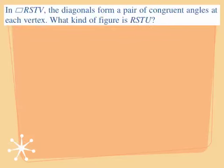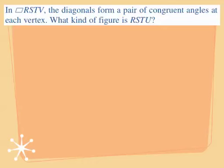In parallelogram RSTV, the diagonals form a pair of congruent angles at each vertex. What kind of figure is RSTV? If the diagonals form congruent angles at each vertex, the diagonal is bisecting two sets of angles. This tells us the shape is a rhombus — because a parallelogram is a rhombus if and only if each diagonal bisects a pair of opposite angles.